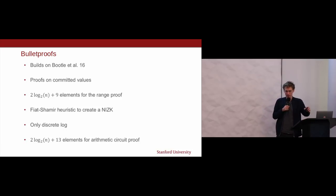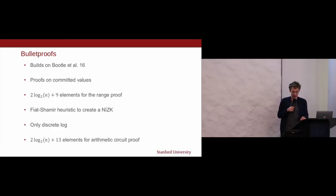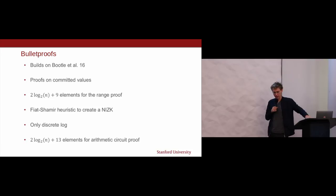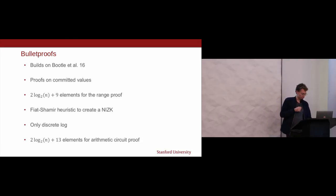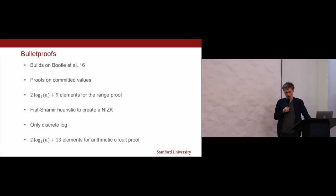We took that and built Bulletproofs, which allows exactly these proofs on committed values. I can commit to number X and build my circuit where X is one of the inputs. We also reduced the proof size from 6 log n to 2 log n. That means for a 64-bit range proof, if I want one for 128 bits — doubling the range — I only add two elements to the proof, so 64 bytes. Bulletproofs also work for arbitrary arithmetic circuits, so whatever you can do a SNARK for, you can do a Bulletproof — without a trusted setup.